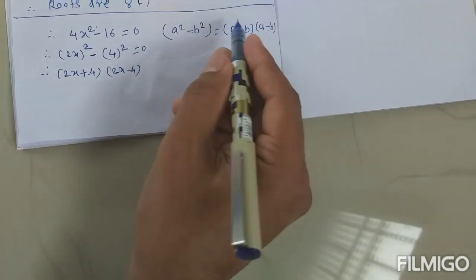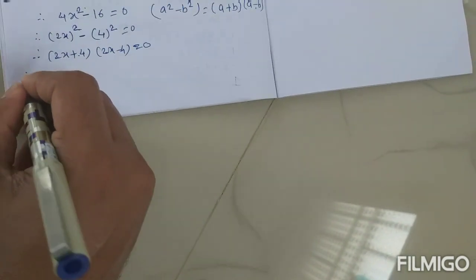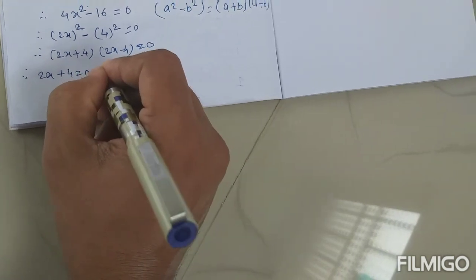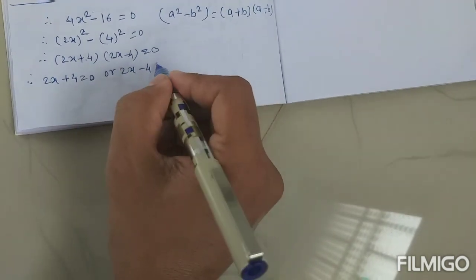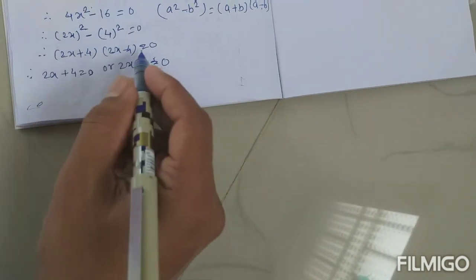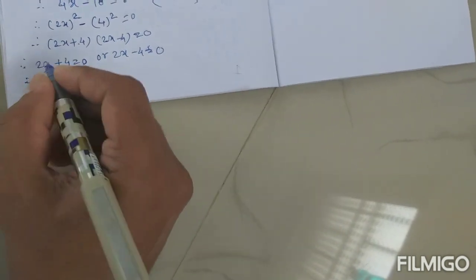a plus b, a minus b, this way is equal to 0. Now 2x plus 4 is equal to 0 or 2x minus 4 is equal to 0. These two brackets you have to write with the 0 because these are equal to 0.